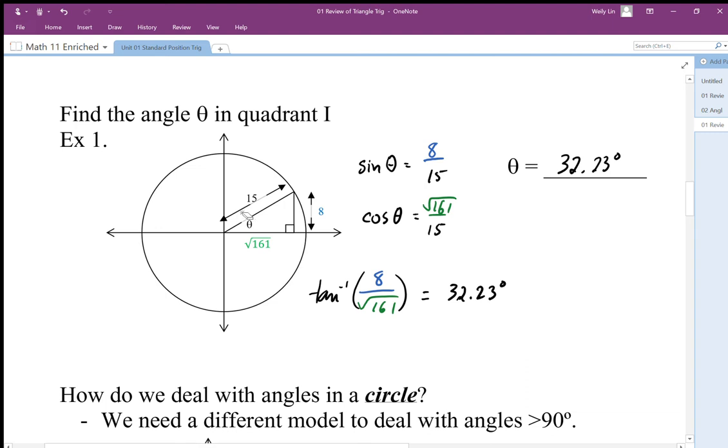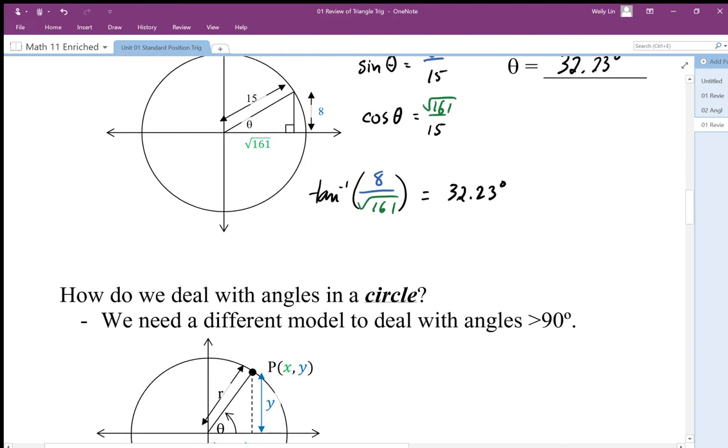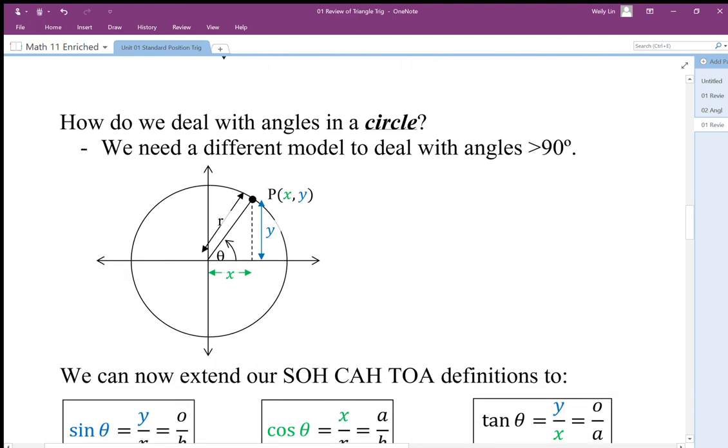To do that we need a different model for describing our ratios. Angles, no problem—360 degrees, that's fine. But how do we describe the ratio when we go beyond 90 degrees? We have to redefine our trig ratios.